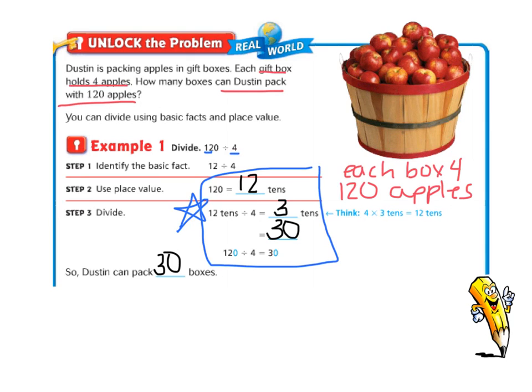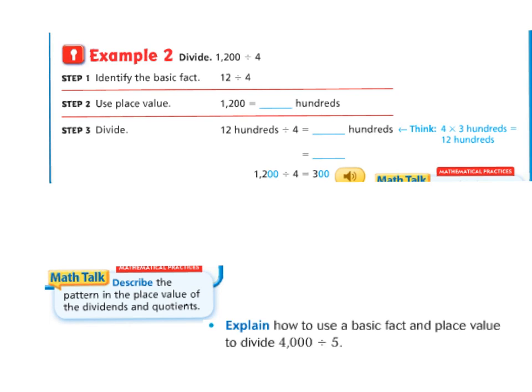Let's do another one together. Let's divide 1,200 divided by 4. Our basic fact is still 12 divided by 4, and we know that 12 divided by 4 is 3. For 1,200, I'm going to use that basic fact because 1,200 is the same as 12 hundreds. Since 12 divided by 4 is 3, 12 hundreds divided by 4 is 3 hundreds, and 3 hundreds, or the two zeros from my 1,200 added to my answer, gives me 300.